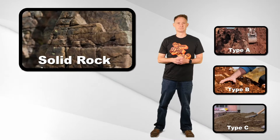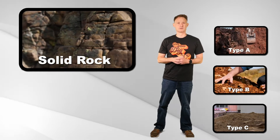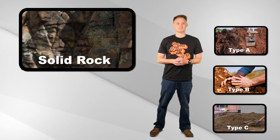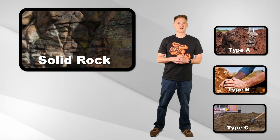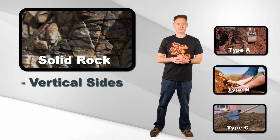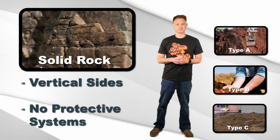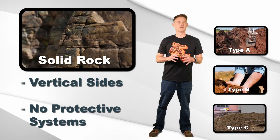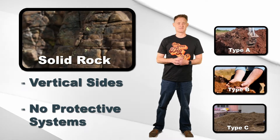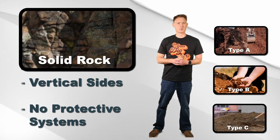There are four classifications of soil. The first one is solid rock. Excavations in solid rock can be made with vertical sides with no protection systems. It is very rare to find this type of soil and it's usually only found in quarries.